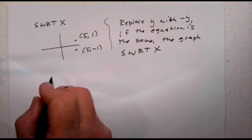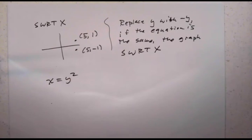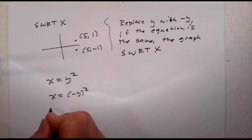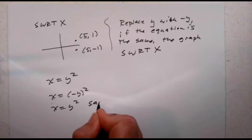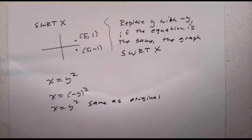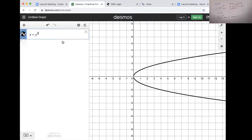An example of that would be x equals y squared. If I replace y with negative y, the equation becomes x equals negative y squared, but negative y times negative y is the same as y squared — same as the original. Looking at Desmos to see what x equals y squared looks like: we replaced y with negative y and got the same thing, so it is symmetric with respect to the x-axis.